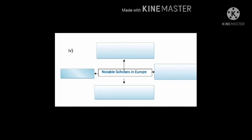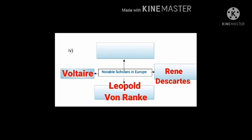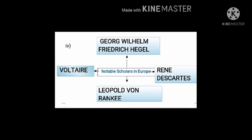Now let's start with the fourth web: names of notable scholars of Europe. You have already learned so many names of European scholars, so write down any four names. I will read out the names: Voltaire, René Descartes, George Wilhelm Friedrich Hegel, Leopold von Ranke, Michel Foucault, Karl Marx. Any four names which you find easy to learn and remember, note them down here.